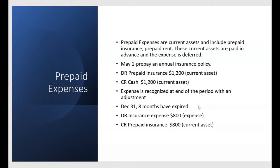So at December 31st, eight months have expired. We'll debit insurance expense $800 and credit prepaid insurance $800. Notice for the year, we might have paid $1,200 for insurance, but we're only going to have incurred $800 of expense. So for the current year, your cash basis insurance expense is $1,200, but your accrual basis insurance expense is only $800.